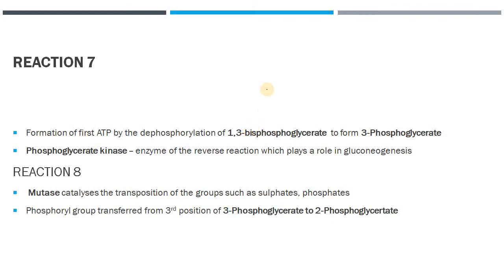Next is the formation of the first ATP molecule via a dephosphorylation reaction, where 1,3-bisphosphoglycerate is converted to 3-phosphoglycerate, catalyzed by the enzyme phosphoglycerate kinase. This enzyme also plays a vital role in gluconeogenesis. The next step is catalyzed by the enzyme mutase — a transferase enzyme — which transfers the phosphate group from position 3 to position 2.